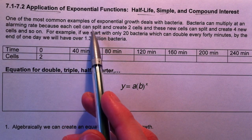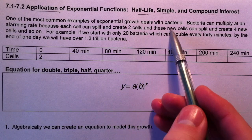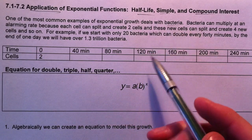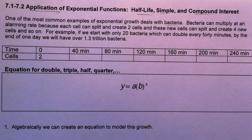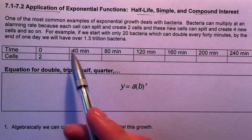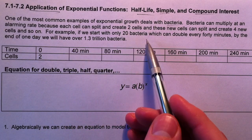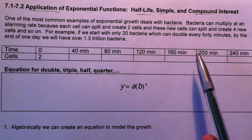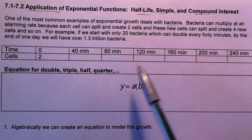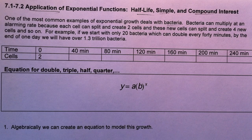One of the most common examples of exponential growth deals with bacteria. Bacteria can multiply at an alarming rate because each cell can split and create two cells, and these new cells can split and create four new cells — just doubling and doubling and doubling. For example, if we start with only 20 bacteria now and they can double every 40 minutes, by the end of one day we could have 1.3 trillion bacteria.